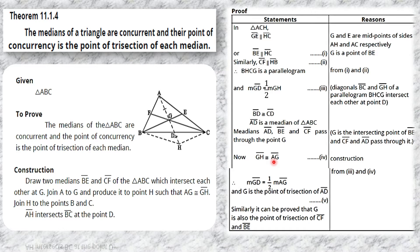Now, AG is congruent to GH by construction. And measure GD equals half of measure GH (from the parallelogram diagonal property). Since GH equals AG, we can substitute: measure GD equals half of measure AG. The reason is from steps 3 and 4. Therefore, G is the point of trisection of median AD.